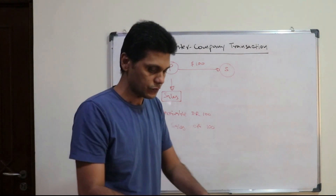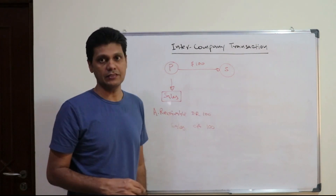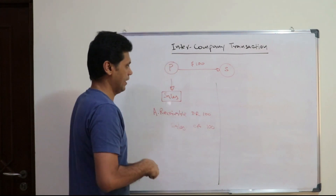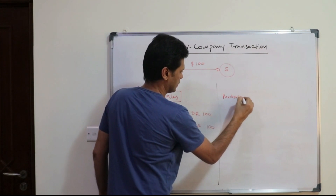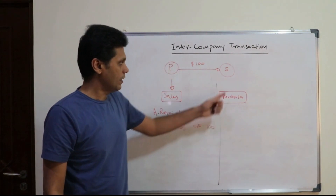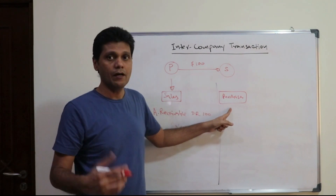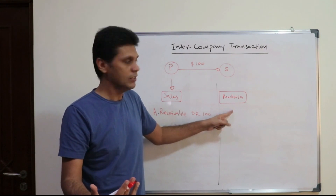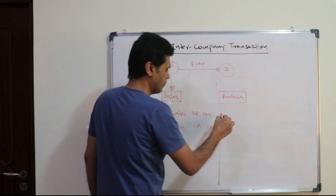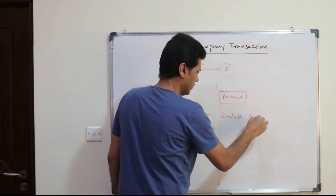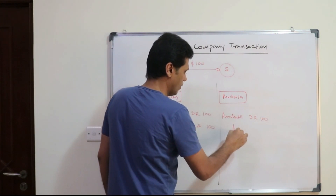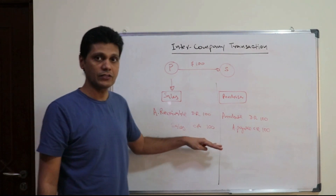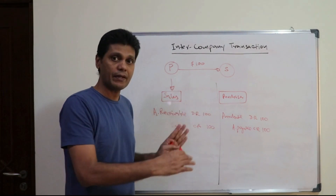When it comes to P company, P company will treat this as a sale. As a result of that, S company — as far as S company is concerned, this is a purchase. So when there is a purchase, how will they record this particular transaction? In the separate financial statement, that will be: purchases account debit $100 and accounts payable account credited $100.